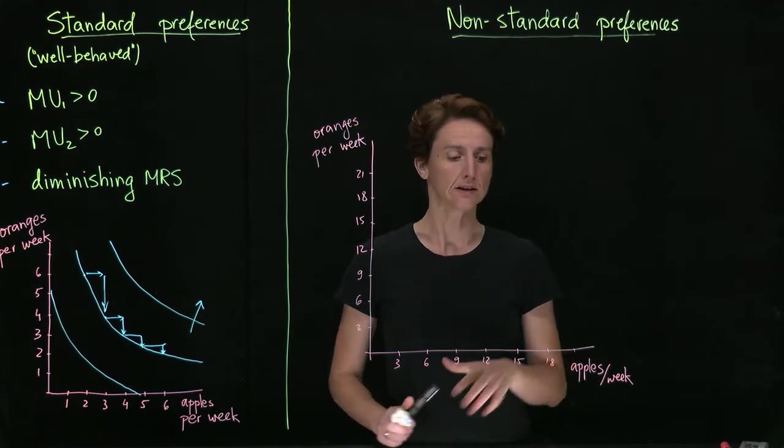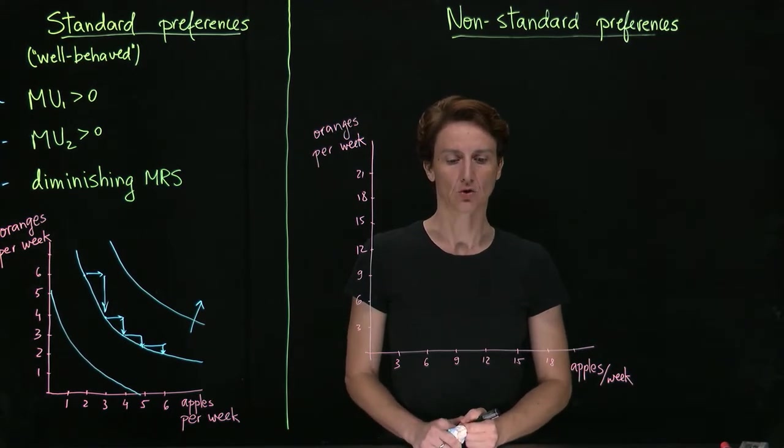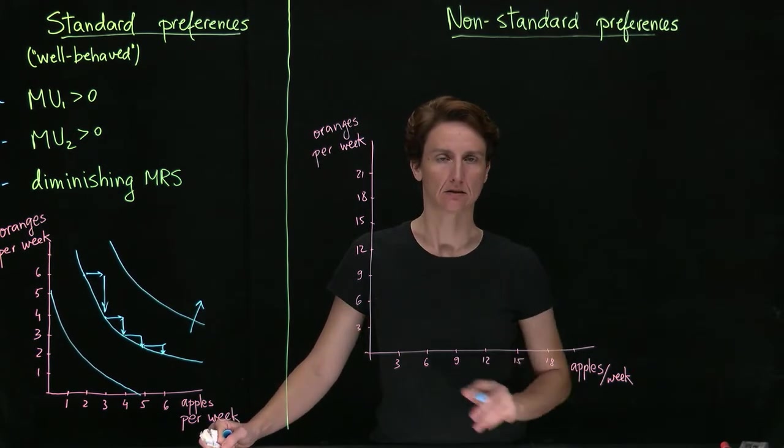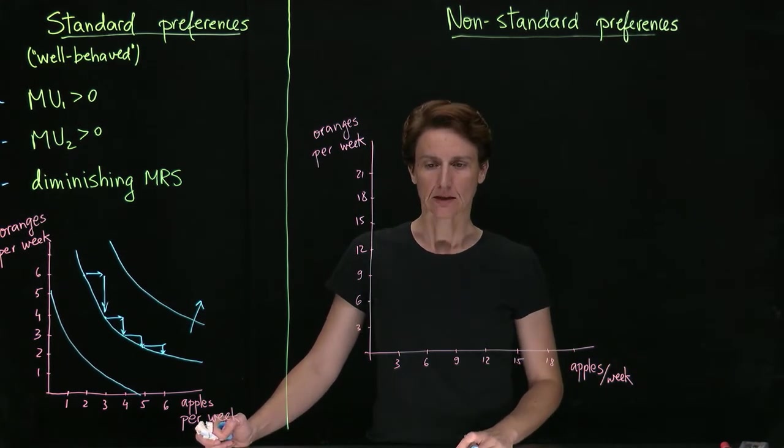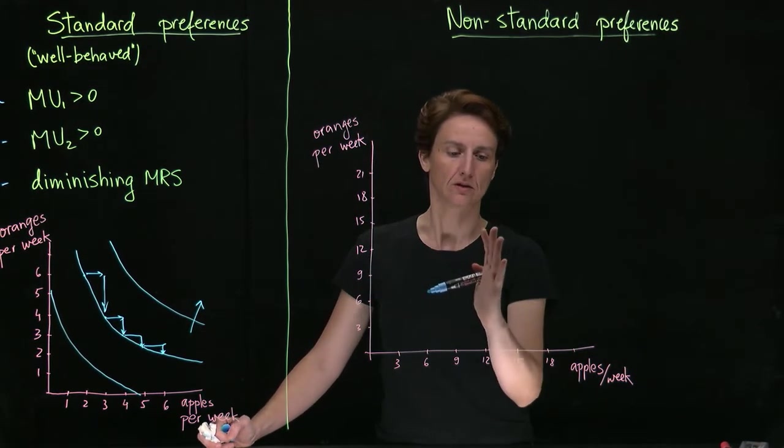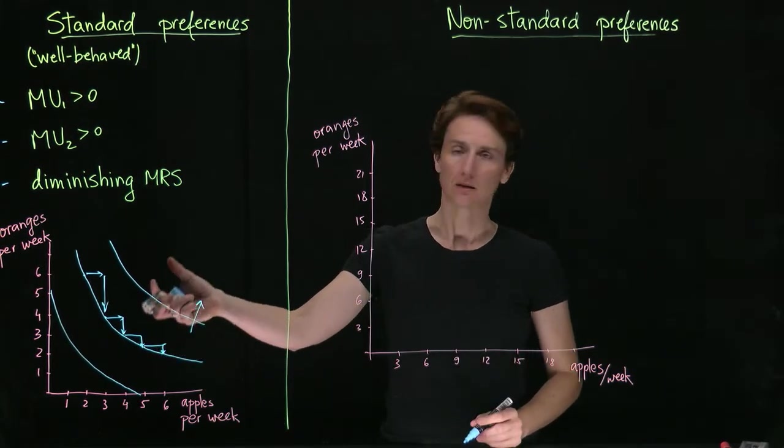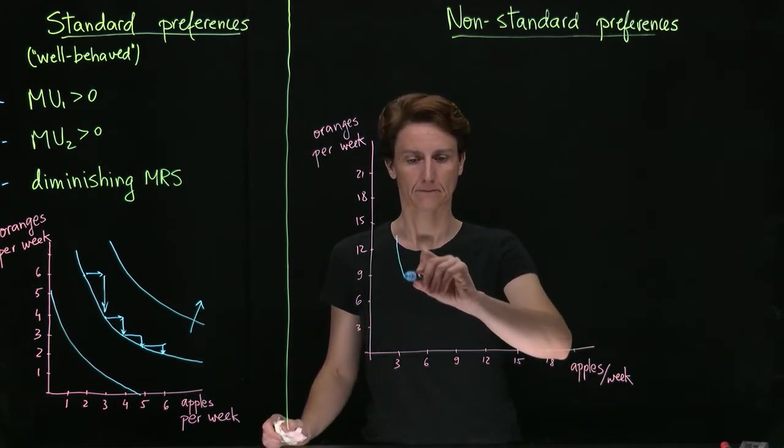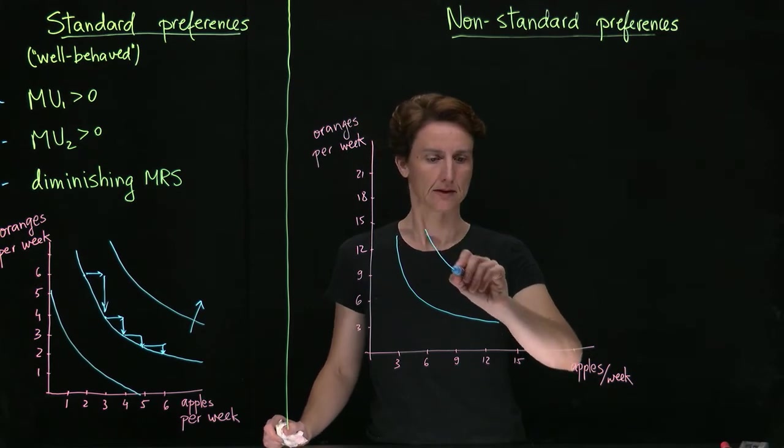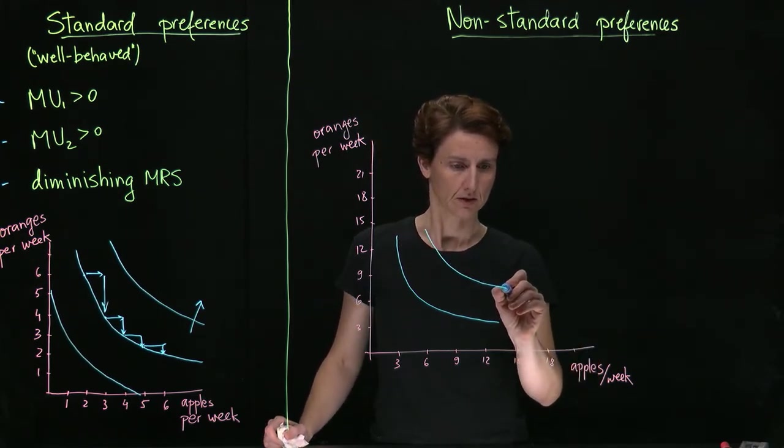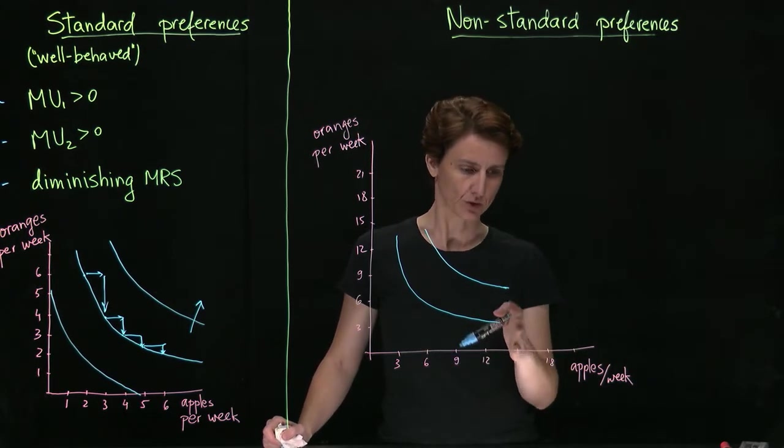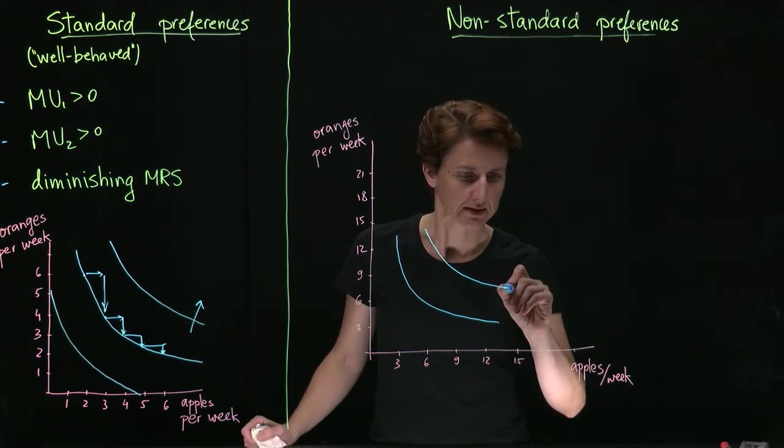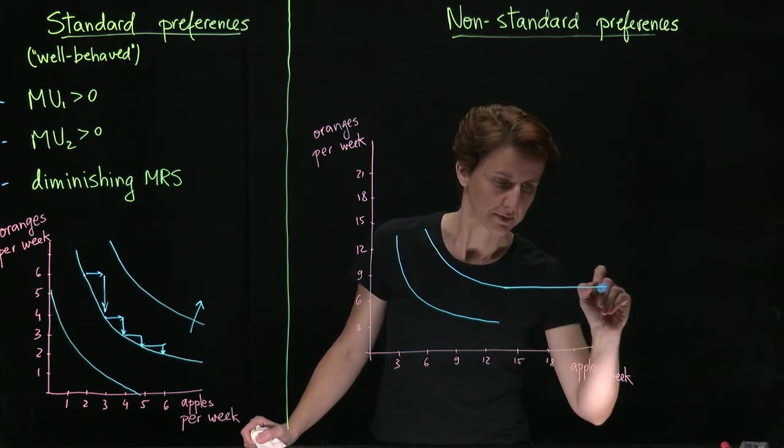What if instead we did like both apples and oranges but no more than twice a day? So in a given week, once we've had 14 of either, that's enough for us. Well then, everywhere below and to the left of those cutoffs, indifference curves can be expected to behave the same way because marginal utilities are still positive. However, as we get close to these cutoffs, if we're having more than 14 apples a week, we don't get any further benefits from them, that means the indifference curve will become flat.